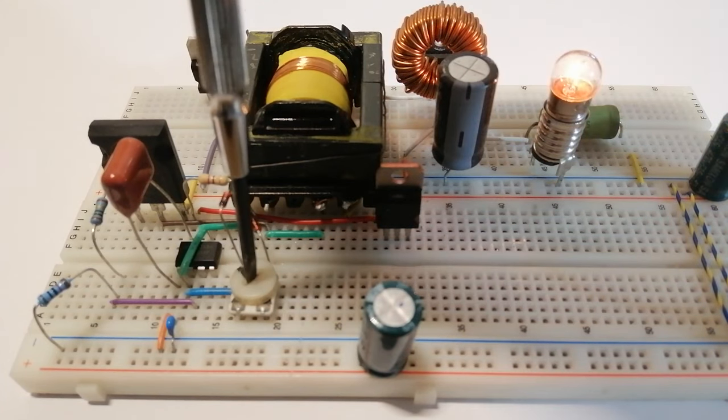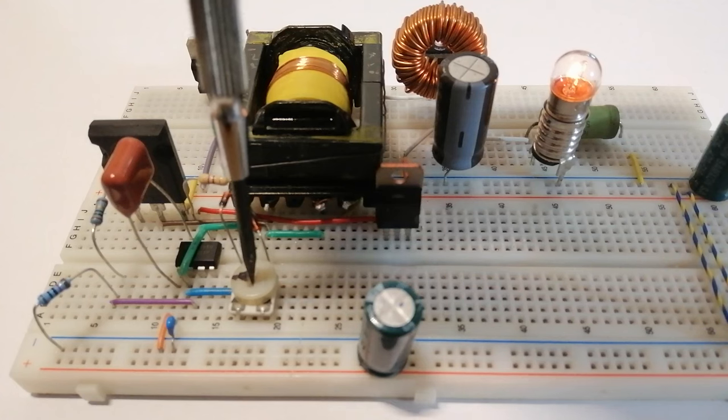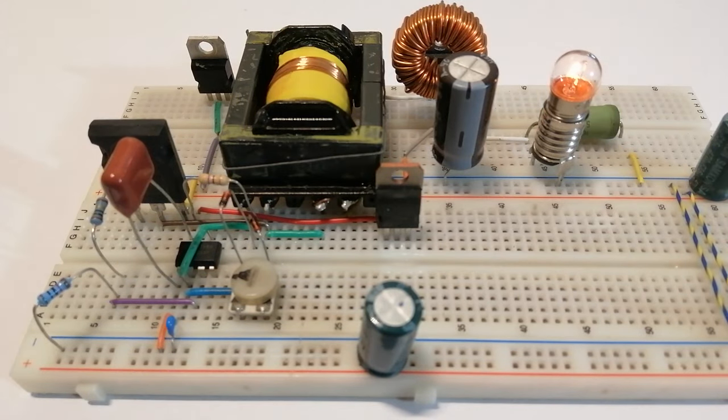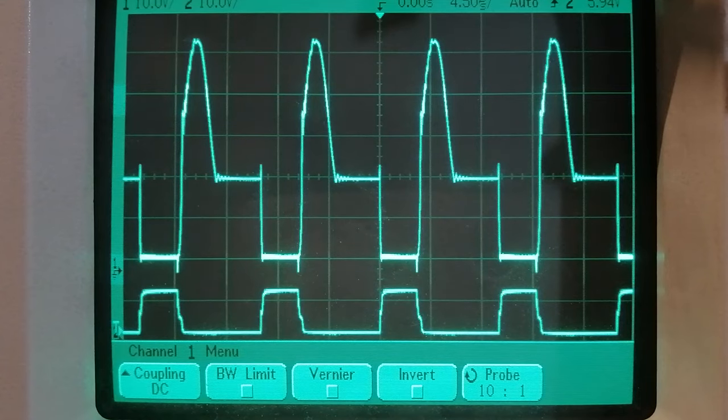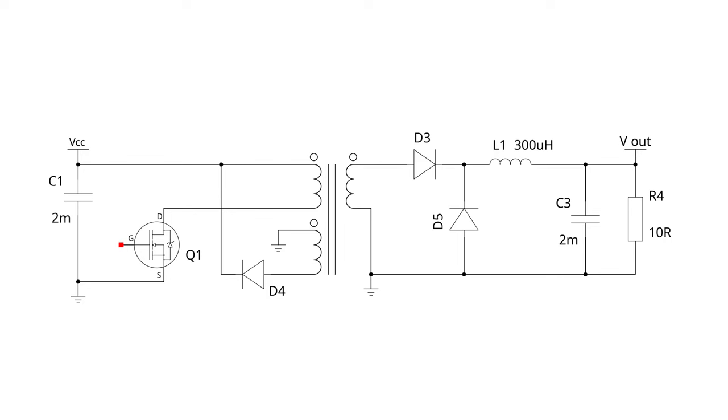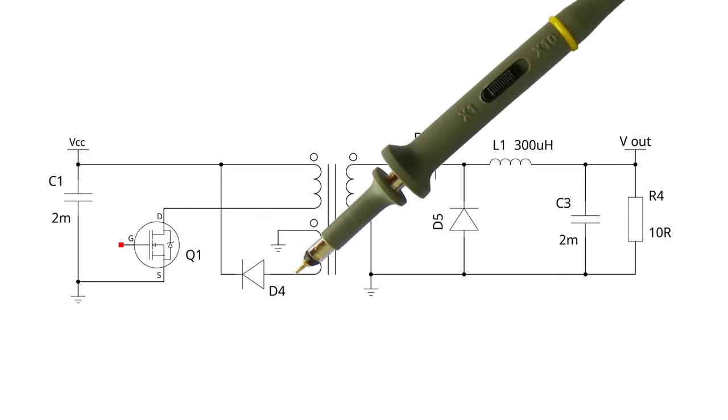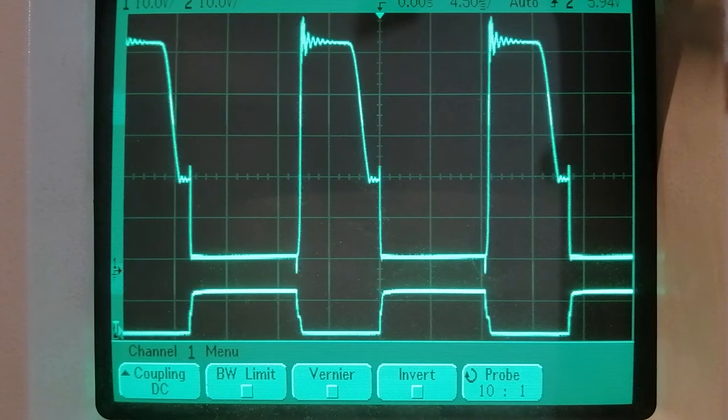In my case I can go over 50% duty cycle because the demagnetizing coil has a lower number of turns than the primary coil. Now to understand this better we can probe the output of the demagnetizing coil before the diode and see what the waveform is.